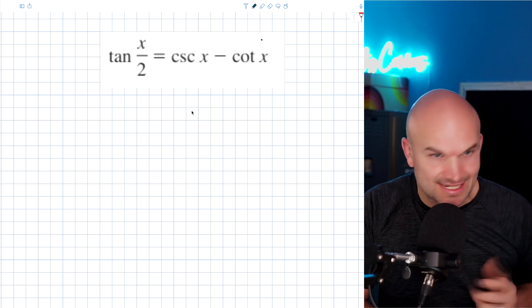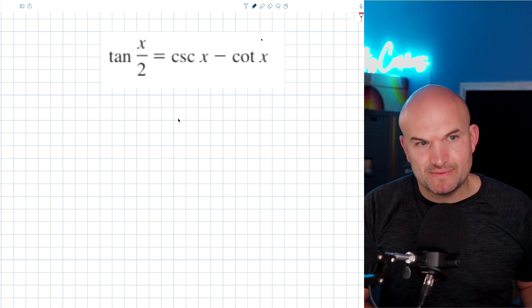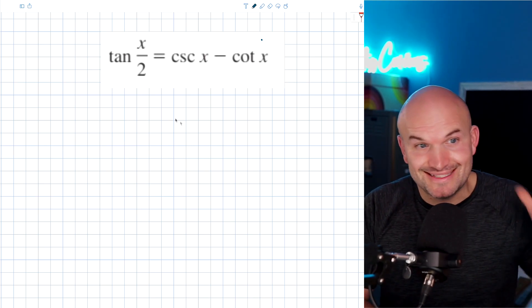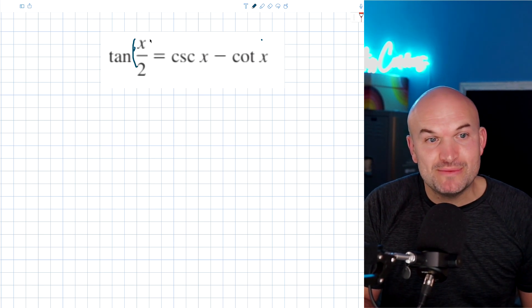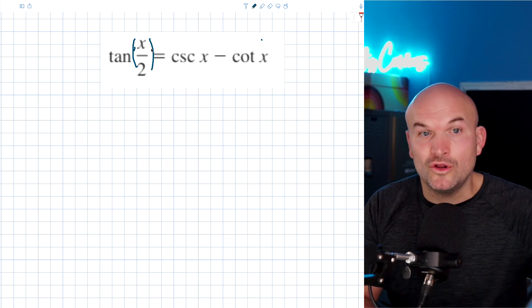A lot of times when students are looking at an identity like this, they might get confused because they might not know their identity. So you've got to know your identities, right? Whenever you see x divided by two, you should be thinking of the half angle formula.